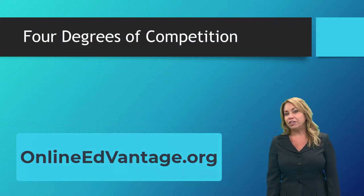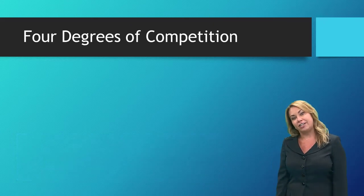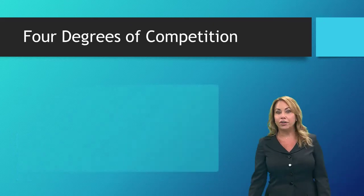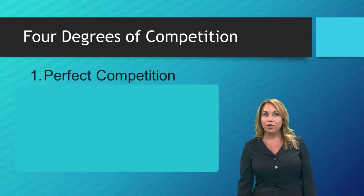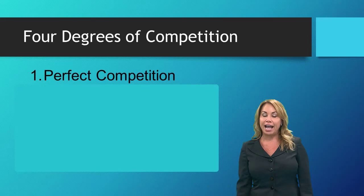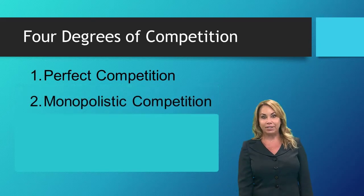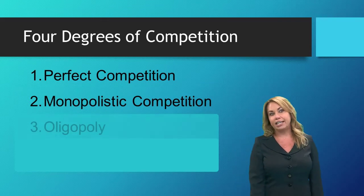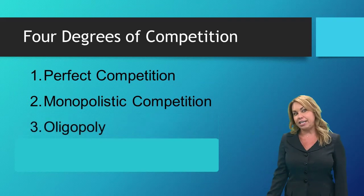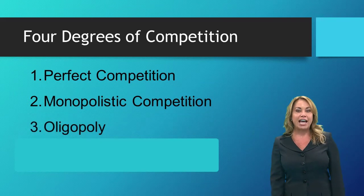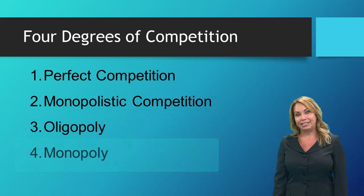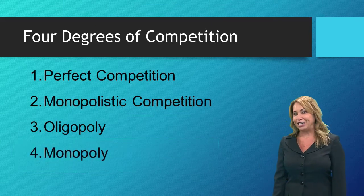The four different degrees of competition that we will be taking a look at today are: first, perfect competition — this one actually rarely exists but it is important to talk about. Second, monopolistic competition. Third, oligopoly. And last, we will talk about monopolies. So let's get going.